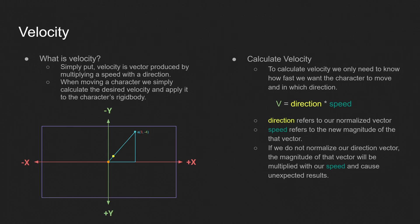So, to calculate velocity, we only need to know how fast we want the character to move and in which direction. So, velocity, represented by the capital V here, is just equal to direction times speed. Direction refers to our normalized vector in yellow, down here. And speed refers to the new magnitude of that vector. If we don't normalize our direction vector, the magnitude of that vector will be multiplied with our speed and cause unexpected results. And what I mean by that is, if you remember from the previous slides, the magnitude of vector A was equal to 5. So, let's assume we have a speed value of 3. We know this magnitude is equal to 1. And 1 times 3 is 3. But this magnitude is equal to 5. And 5 times 3 is 15. So, if we didn't normalize this, we would be moving 5 times faster than we expected to be when we actually did the multiplication to calculate the velocity.